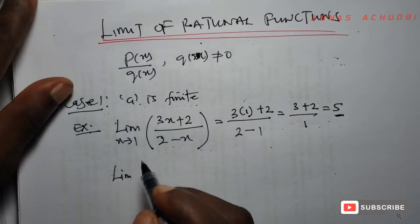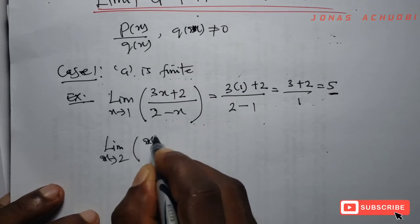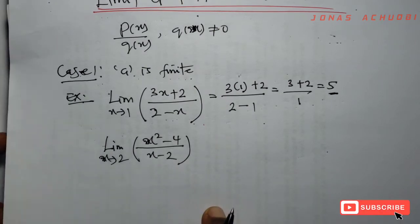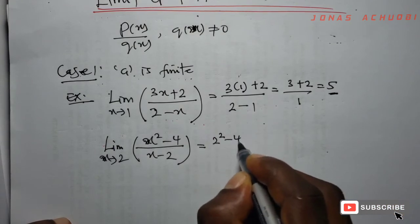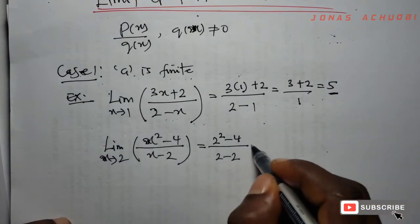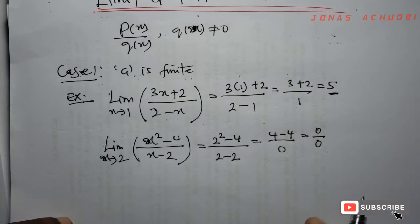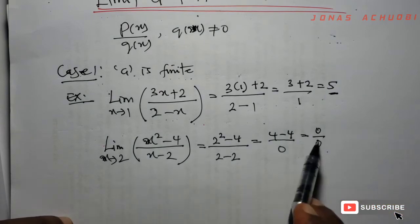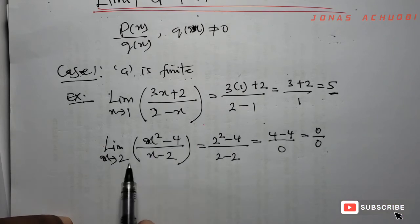Now we want to evaluate the limit as x tends to 2 of the function (x² − 4) / (x − 2). If we substitute 2 into the function, we get (4 − 4)/(2 − 2) = 0/0, which is an indeterminate term — 0/0 has no definite value. So the function is not defined at x = 2.